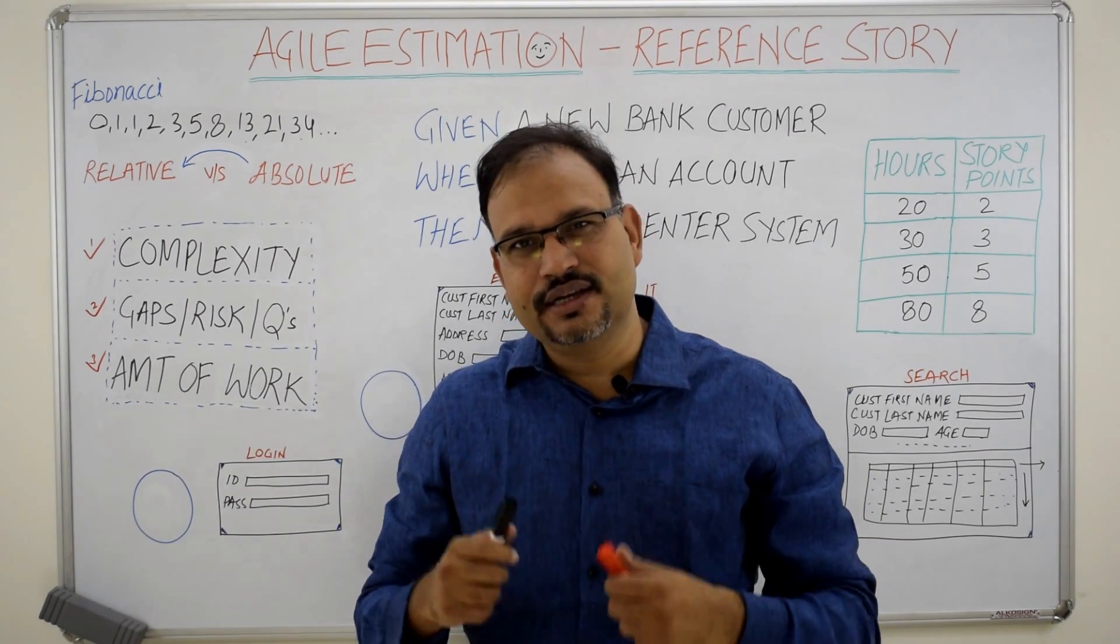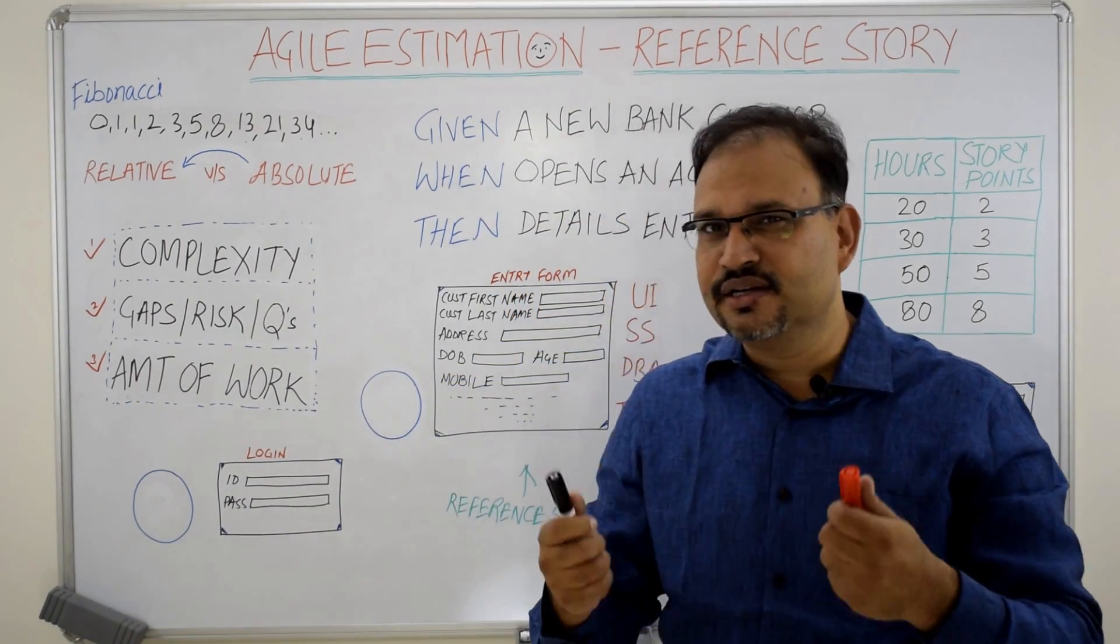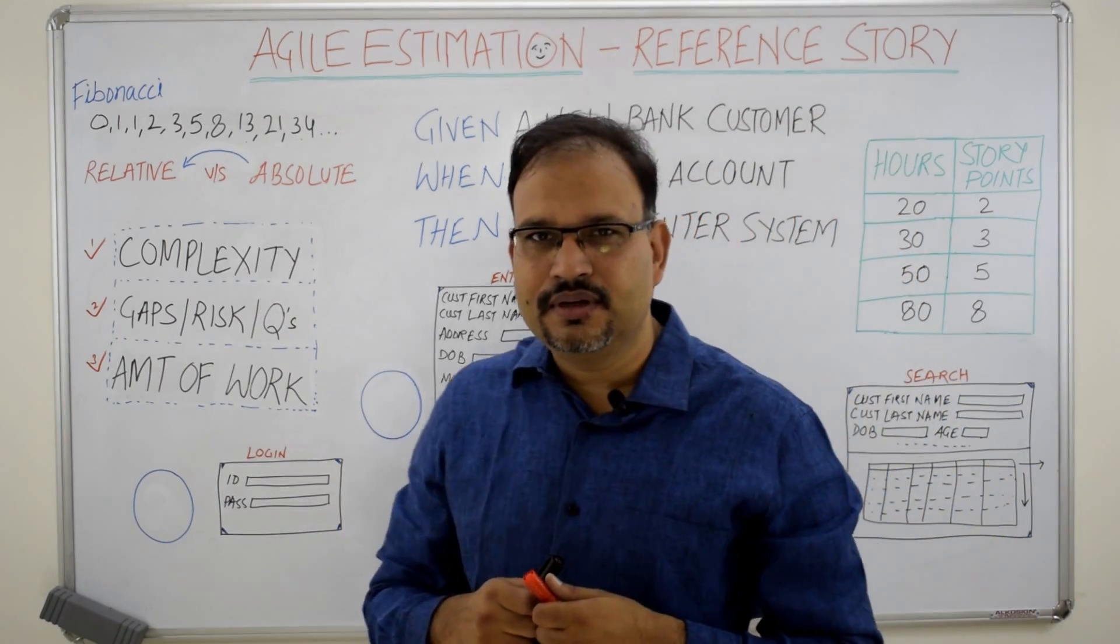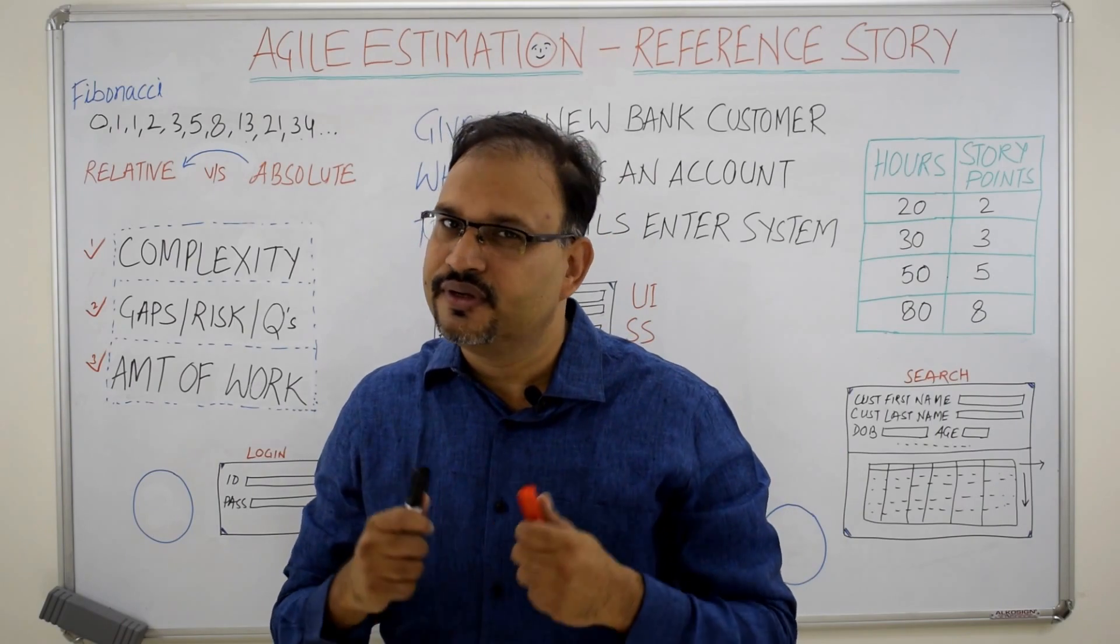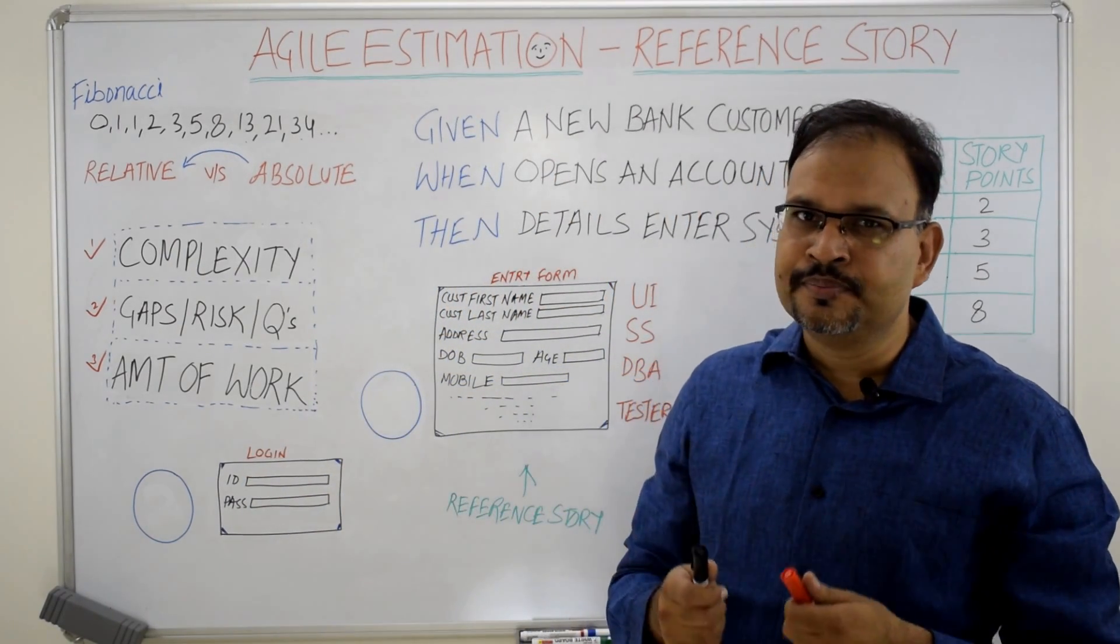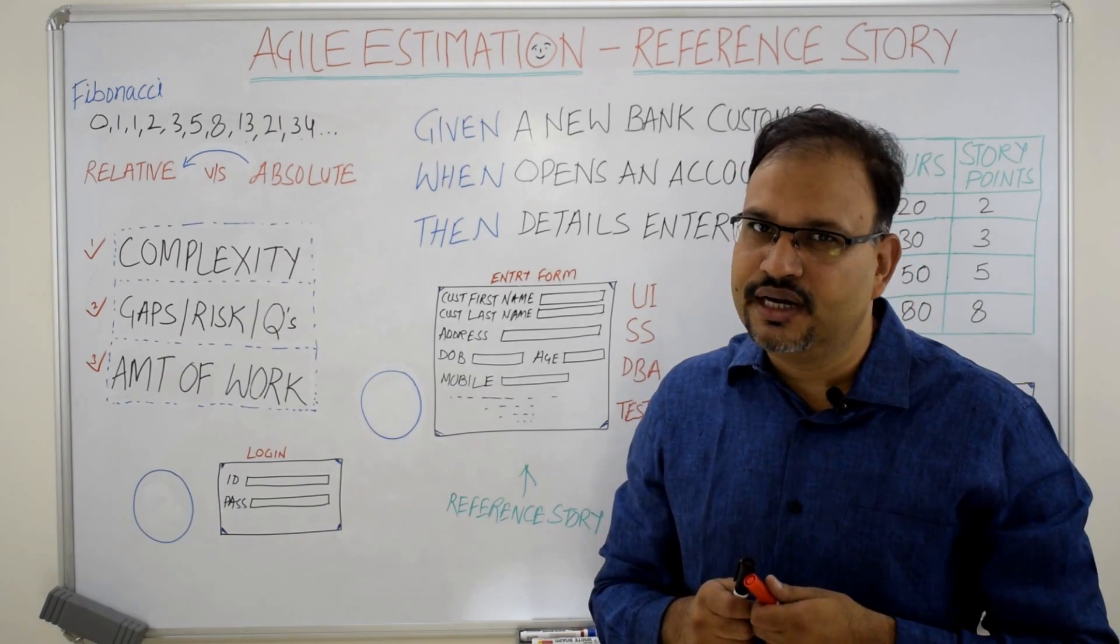Before we dwell into the reference story and the estimation process around it, let's understand what is a story point. A story point is a number which is assigned to a story to estimate it and these numbers are taken from the Fibonacci series because stories have to be estimated relatively.